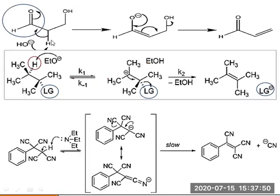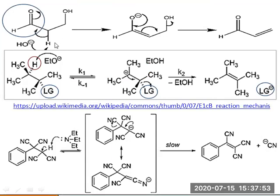Here are a few examples of E1cB reactions. In the first example, OH⁻ abstracts a proton to generate a carbanion, which is stabilized by the adjacent carbonyl group — an electron-withdrawing group. The stabilized conjugate base then undergoes elimination to give an alpha-beta unsaturated carbonyl as a product. This is highly stable and is analogous to what happens in aldol condensation-type reactions.